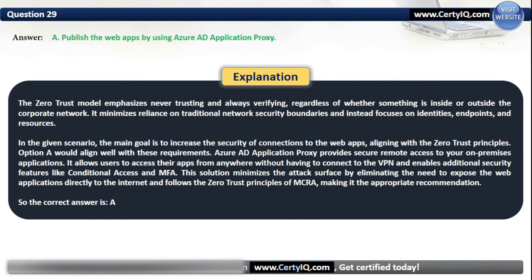The Zero Trust model emphasizes never trusting and always verifying, regardless of whether something is inside or outside the corporate network. Azure AD Application Proxy provides secure remote access to your on-premises applications, allowing users to access their apps from anywhere without connecting to a VPN, and enables additional security features like Conditional Access and MFA. This solution minimizes the attack surface by eliminating the need to expose web applications directly to the internet, aligning with Zero Trust principles of MCRA.